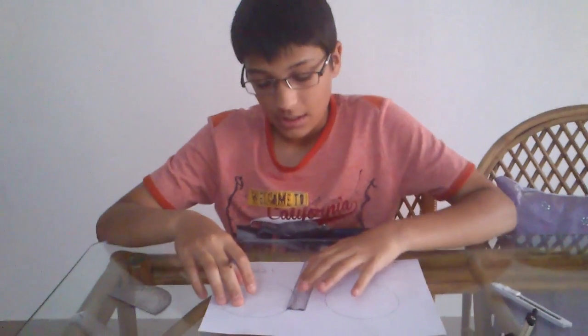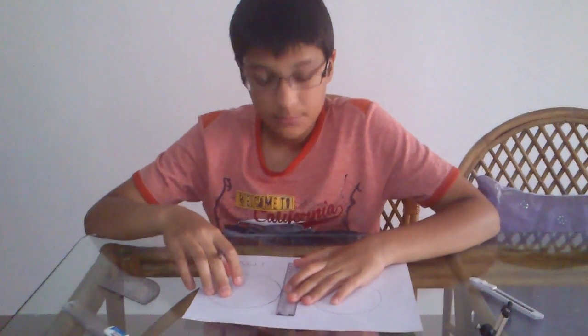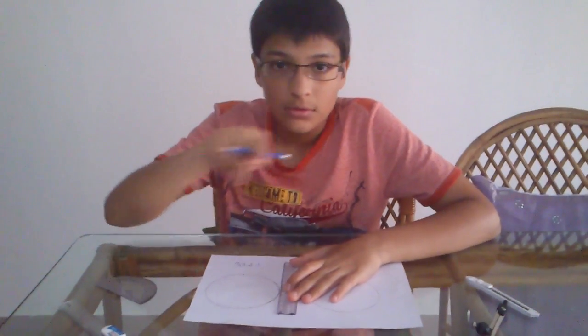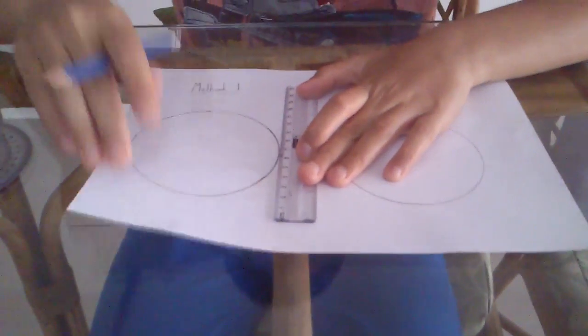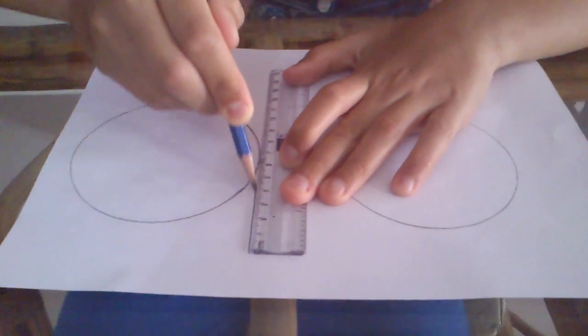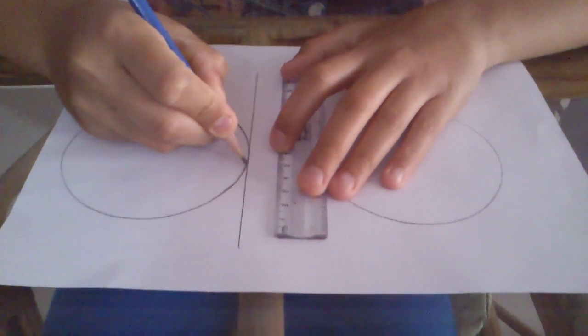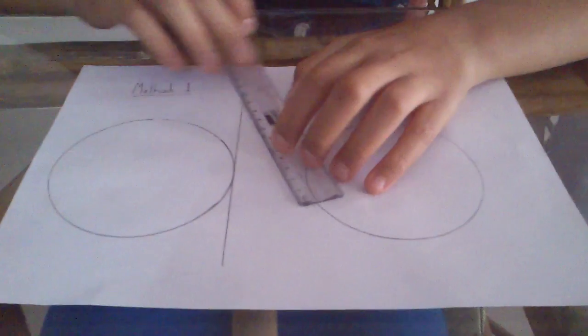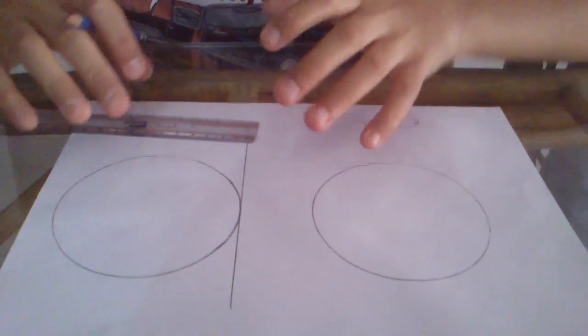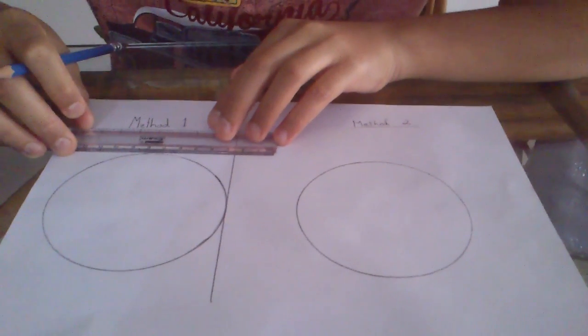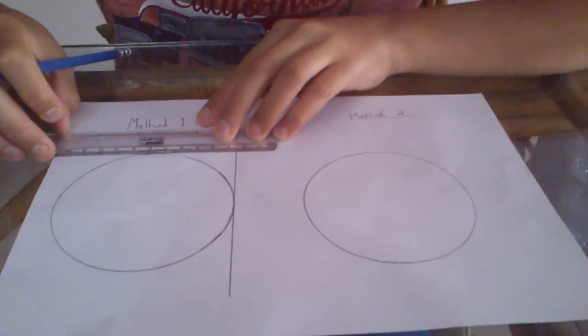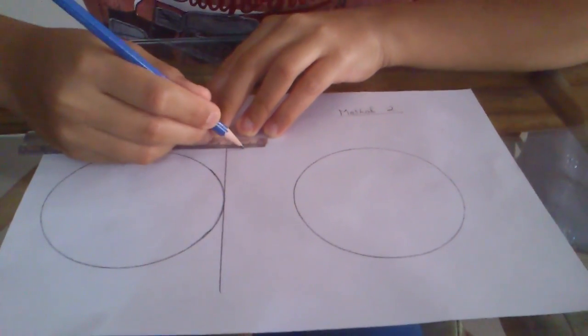Now the first method is by simply drawing a square around the circle that you have. So what you're going to do is take yourself a ruler and draw a nice straight line that meets any side of the circle. And then make it nice and long. And then you're going to do the same with all the other sides so that it keeps intersecting to make a square like so.